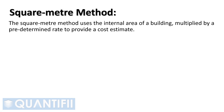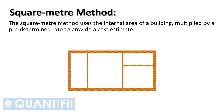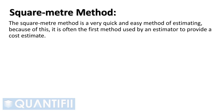Let's work through the square meter method — how to use it, its advantages and disadvantages. The square meter method uses the internal area of a building multiplied by a predetermined rate to provide a cost estimate. When measuring the internal area, all walls, lifts, ducts, etc., shown on plan should be included in the area calculation. The square meter method is a very quick and easy method of estimating; because of this, it is often the first method used by an estimator to provide a cost estimate.